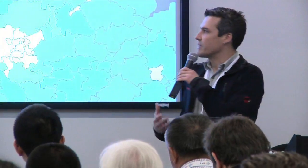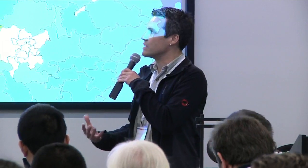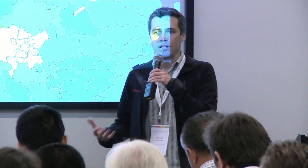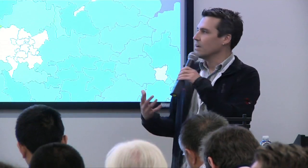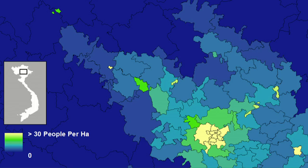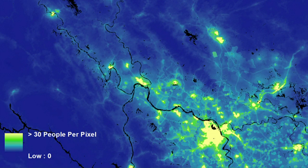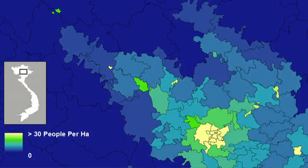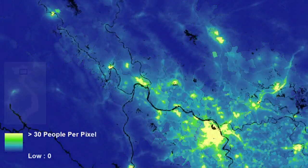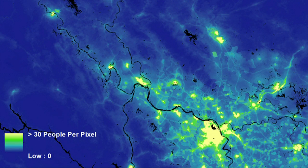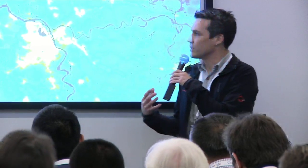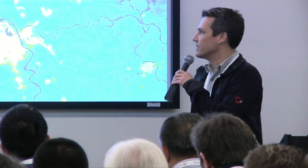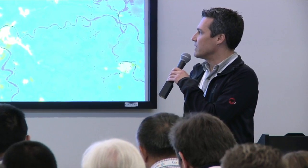I want to talk about the methodological issues we use to produce these data sets. The large goal was to take something collected at the administrative unit level — census data, population counts, demographic information — and disaggregate that to a much finer, gridded level. What we see here in northern Vietnam is a disaggregation of census data collected at relatively coarse administrative units down to 100-meter by 100-meter pixel scales, making disease and risk mapping much more useful at finer spatial resolutions.